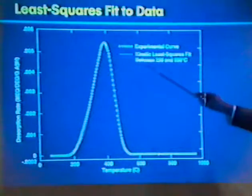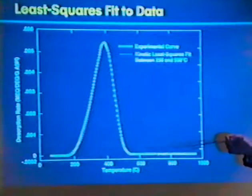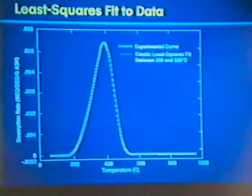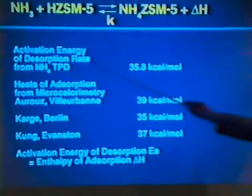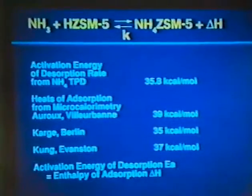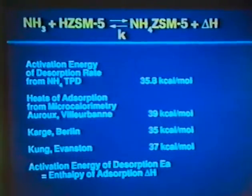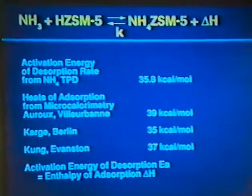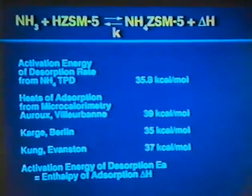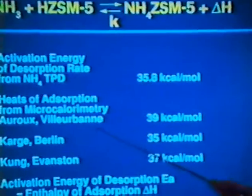Out of this, we cannot only get a verification of a single-site type, which is not the most sensitive test, but we can also get something about the acid strength. And the next slide shows that if we look at, from these desorption curves, we can extract the activation energy for desorption, which is, in our case, about 36 kilocalories per mole. This we can compare with the heat of adsorption, which has been measured in different laboratories, in Krause, in Muhlenwein, Kragg in Berlin, by Kram in Evanston.